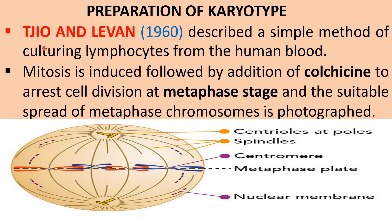Regarding preparation of the karyotype, Geo and Levin in the year 1960 described a simple method of culturing lymphocytes from human blood. Mitosis is induced, followed by addition of colchicine to arrest cell division at the metaphase stage, where chromosomes are arranged at the equatorial plate, also called the metaphase plate.